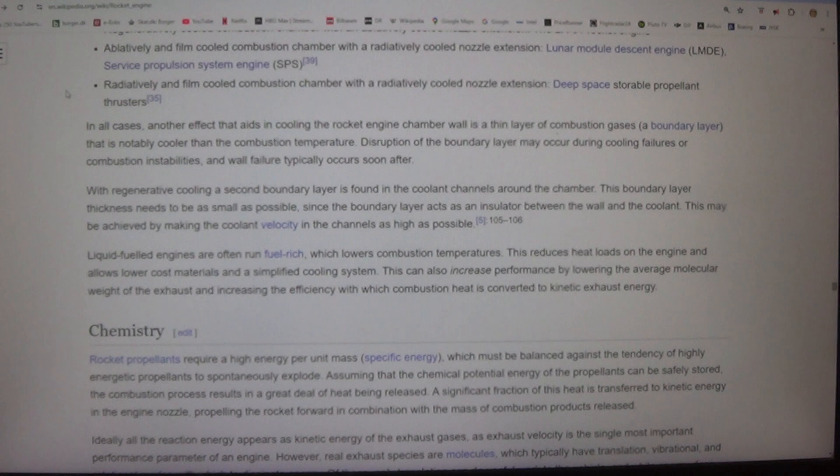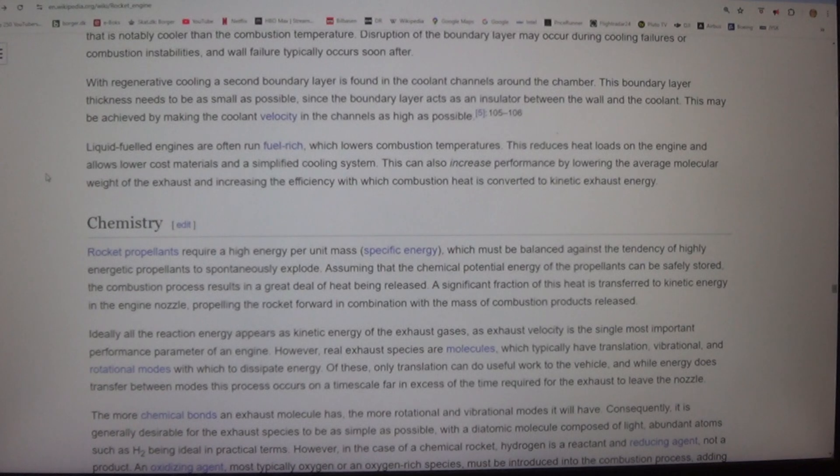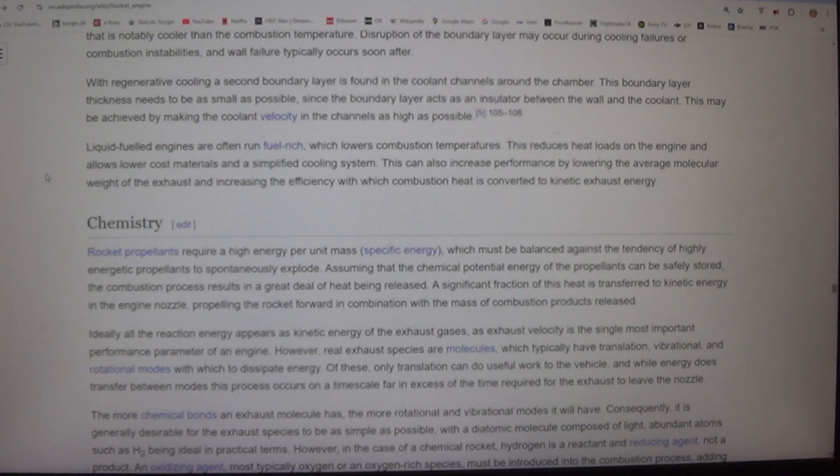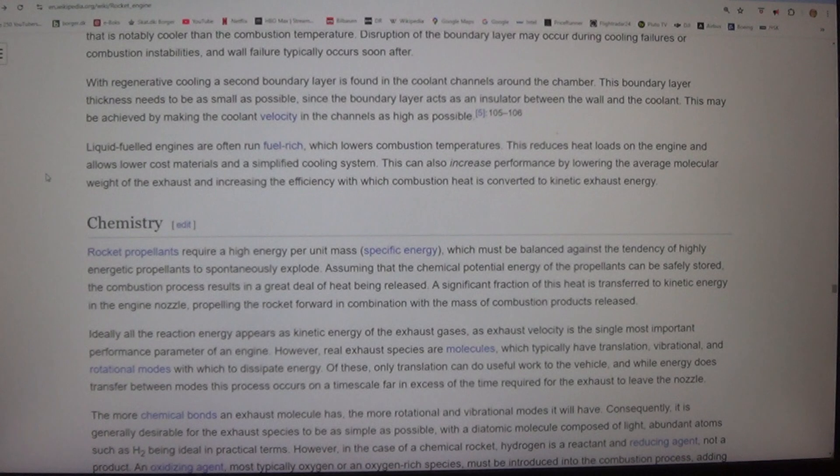In all cases, another effect that aids in cooling the rocket engine chamber wall is a thin layer of combustion gases, a boundary layer, that is notably cooler than the combustion temperature. With regenerative cooling, a second boundary layer is found in the coolant channels around the chamber. This boundary layer thickness needs to be as small as possible, since the boundary layer acts as an insulator between the wall and the coolant.